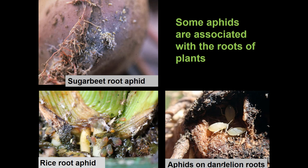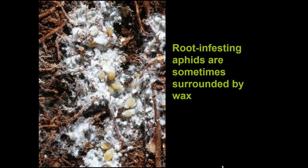Some aphids are associated with the roots of plants. Sugar beet root aphid is one we see quite a bit — particularly on garden beets, spinach, and quinoa. Rice root aphid is found on many kinds of plants, particularly in indoor production — lettuce, greenhouse vegetables, and also the roots of cannabis. Some root-infesting aphids are surrounded by wax. If you pull up a root ball and see cottony material, look closely — you may see aphids tucked in there.